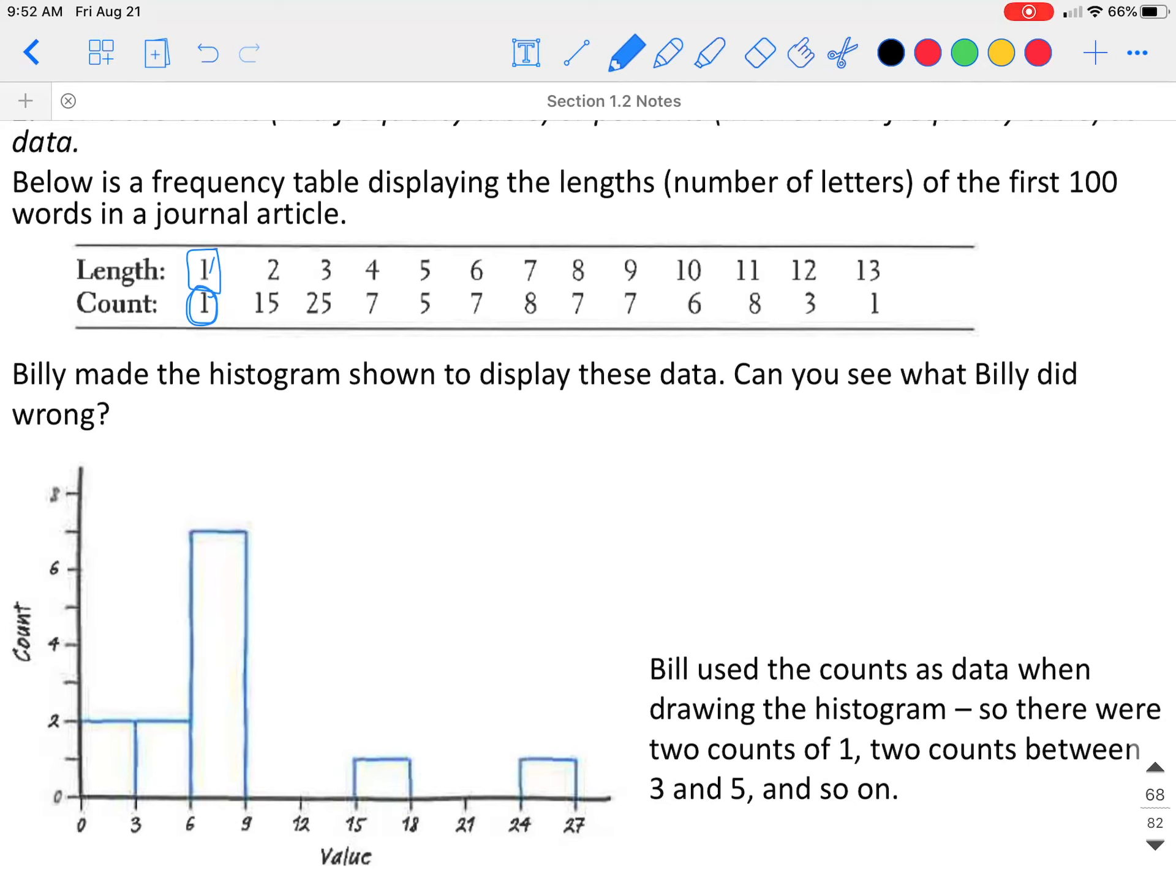When they made this histogram, they accidentally put the values, the counts, on the bottom. So they had two values that went from zero up to three. So they had counts of one twice. They had three and five, which goes up to six. So two of them there.